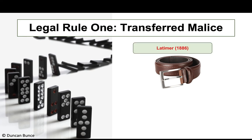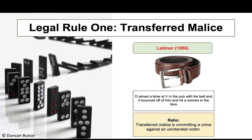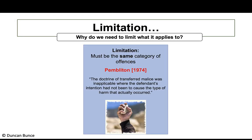The key case is Latimer (1886). The defendant aimed a blow at a victim in a pub with his belt, it bounced off the victim and struck a nearby woman in the face. This case supports the point of transferred malice: the defendant is liable for committing a crime against an unintended victim, because the mens rea transfers to that unintended victim.